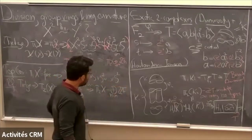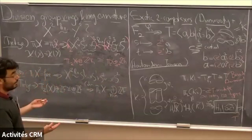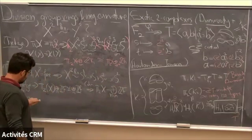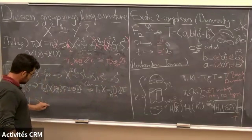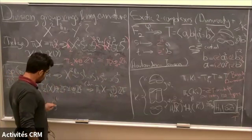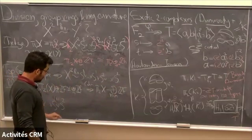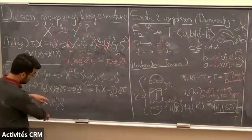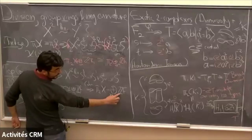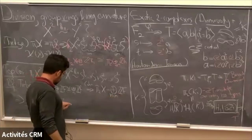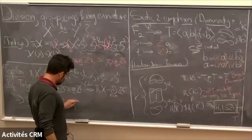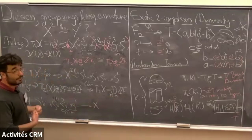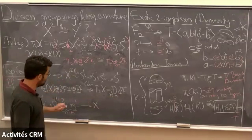Once you have that, you can actually build a homotopy equivalence. You can literally build a map from a wedge of circles and a wedge of two-spheres to your two-complex: send the S¹'s to a basis of generators, and the S²'s to a free basis for π₂. That gives you a map which is a π₁-isomorphism and a π₂-isomorphism, and therefore a homotopy equivalence. So that's the topological implication.